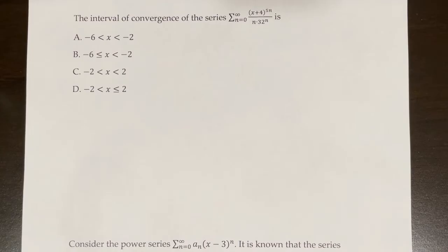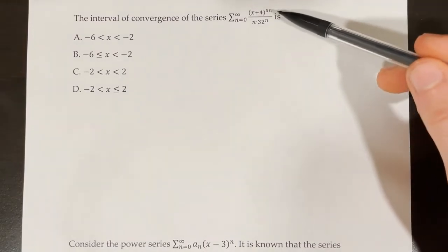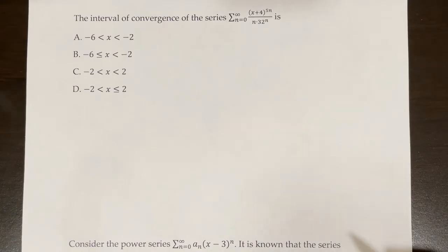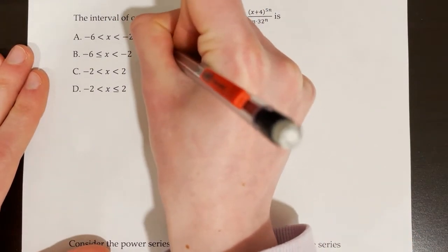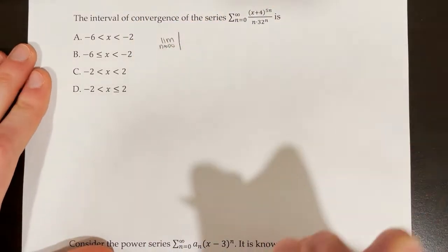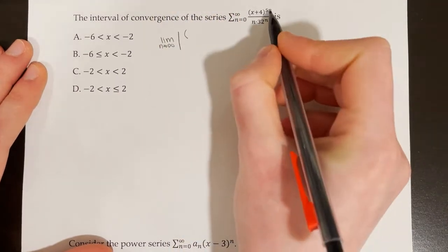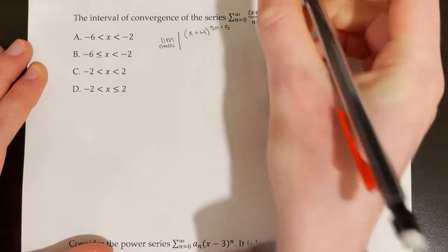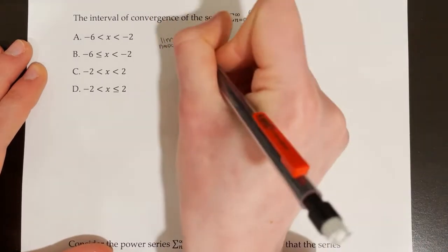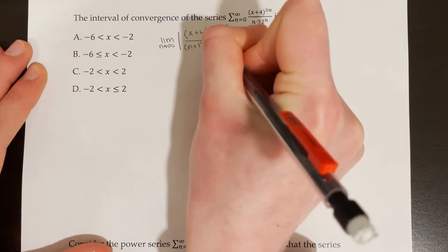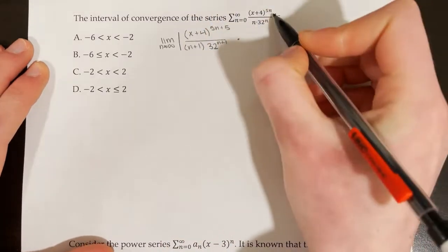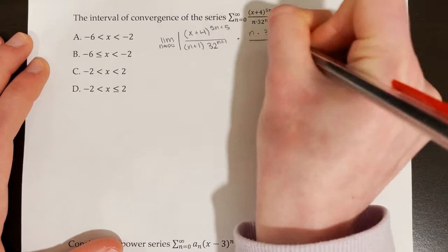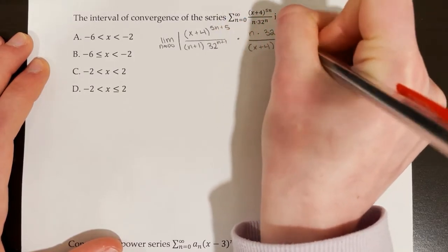The interval of convergence of the series from n equals 0 to infinity of x plus 4 to the power of 5n over n times 32 to the power of n. For finding the interval of convergence, we'll use the ratio test. We'll take the limit as n approaches infinity of the absolute value of a sub n plus 1 over a sub n. For a sub n plus 1, we substitute n plus 1: x plus 4 to the power of 5n plus 5, over n plus 1 times 32 to the power of n plus 1. Then multiply by the reciprocal of the original a sub n: n times 32 to the power of n over x plus 4 to the power of 5n.